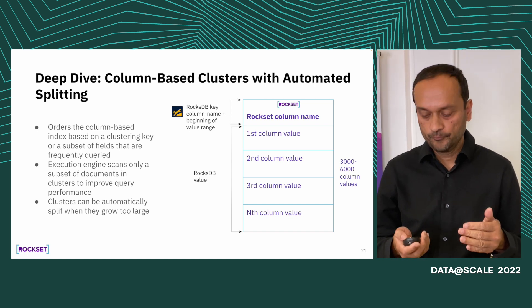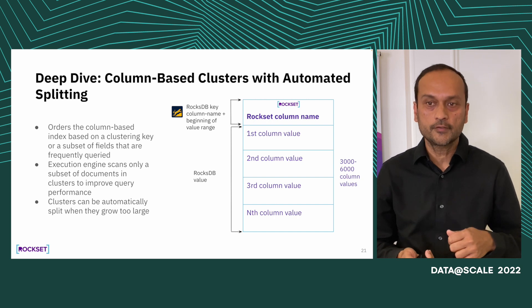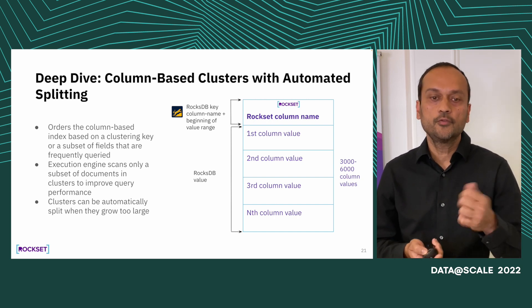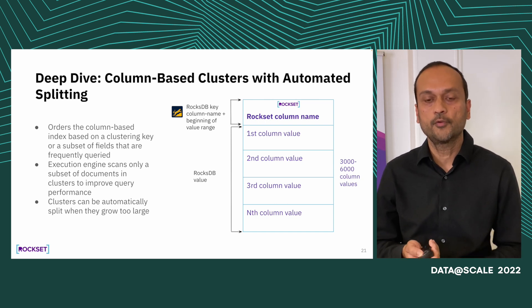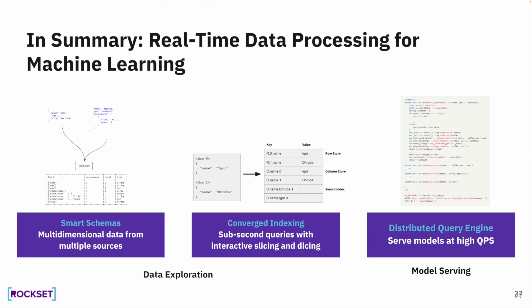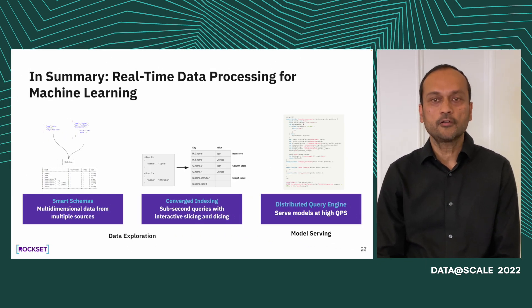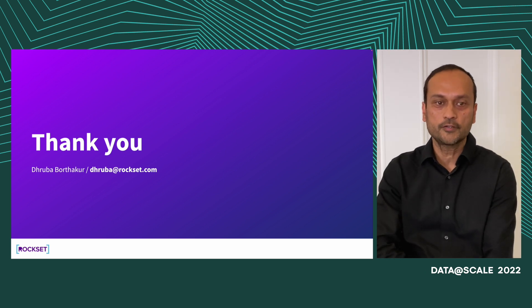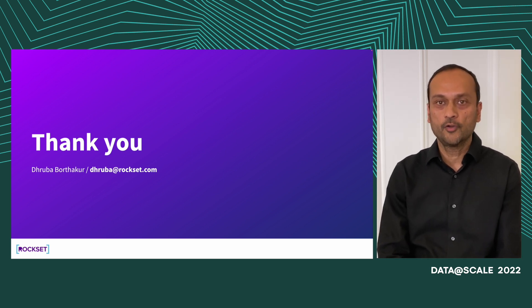These are some of the things I shared about how Rockset makes machine learning better. You can use some of these techniques in your own machine learning model serving infra. Today, we talked about three things: how to handle multi-dimensional data from different sources, how to build indexing into your infrastructure to make queries really fast, and how to make your infrastructure have high QPS to serve models in production with personalization. That's what I covered. I hope you liked my talk — please ask me questions. My email is dhruba@rockset.com. Hope to hear from you. Thank you.